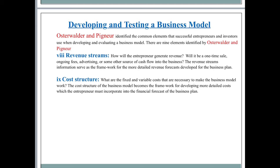Then we talk about cost structure. The fixed and variable costs are necessary to make the business model work. The cost structure of a business model becomes the framework for developing more detailed costs which the entrepreneur must incorporate into the financial forecast of the business plan. You try to reduce costs wherever possible without compromising on the quality of the product, and by reducing costs you increase the margin of profit.